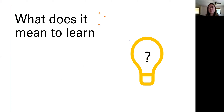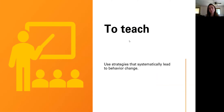What does it mean to learn? Learning is related to a change in behavior — it's what you can do after a lesson that you couldn't do before. For example, save a code, write letters in your name, etc. Now, to teach: we use strategies that systematically lead to behavior change. Teaching happens before — the antecedent — and after — the consequence — the behavior occurs.